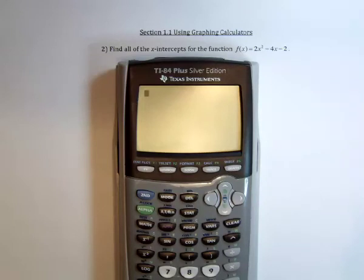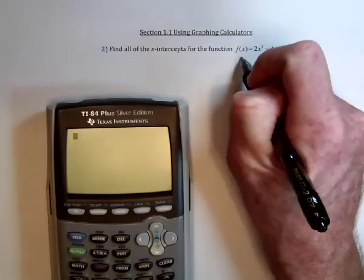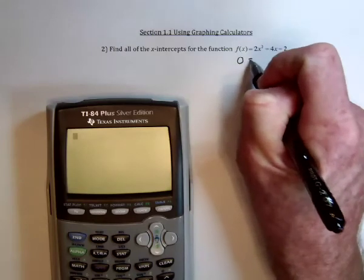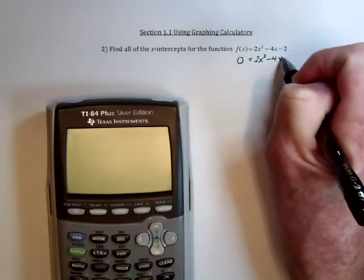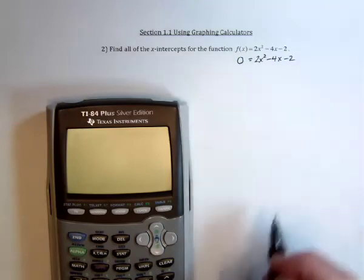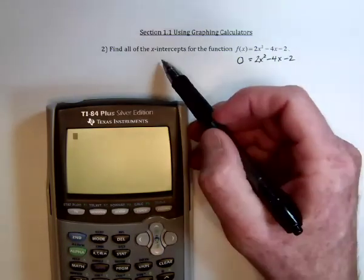And now we're going to find the x-intercepts, which are also sometimes called zeros, for this polynomial 2x² - 4x - 2. So the idea is that the function value will equal zero, and then that will be where this function crosses the x-axis. So it's either called a zero or an x-intercept.